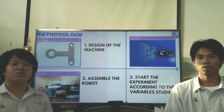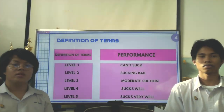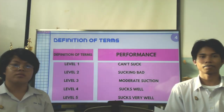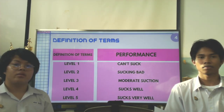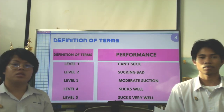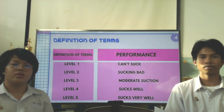Start the experiment according to the Wallace symbol study. Definition of terms: level 1, level 2, level 3, level 4, level 5 — performance can start. Moderate section software review.